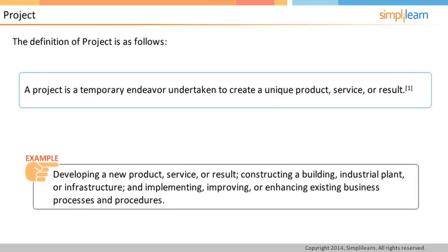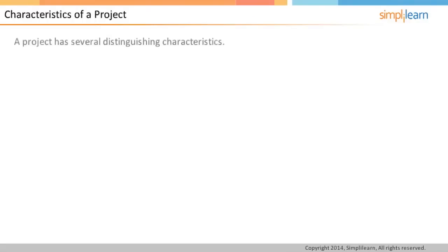And implementing, improving, or enhancing existing business processes and procedures. We will focus on the characteristics of a project. A project can be distinguished based on its characteristics. The definition describes two characteristics of a project.